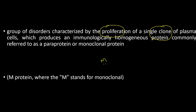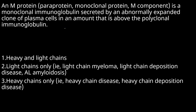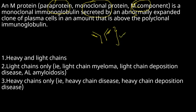The M protein or M component — M stands for monoclonality. This M protein, also called the paraprotein, monoclonal protein, or M component, is the monoclonal protein. As we know, immunoglobulin consists of light chains and heavy chains. The abnormal plasma cell can secrete the whole immunoglobulin, only the light chain — the typical example being primary amyloidosis (AL amyloidosis) — or only the heavy chain, as in heavy chain deposition disease.